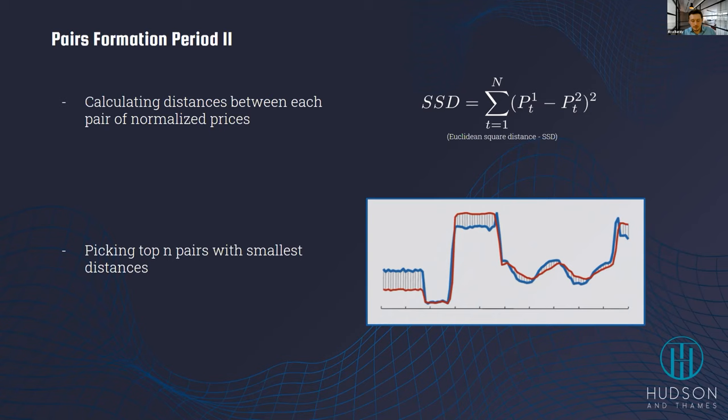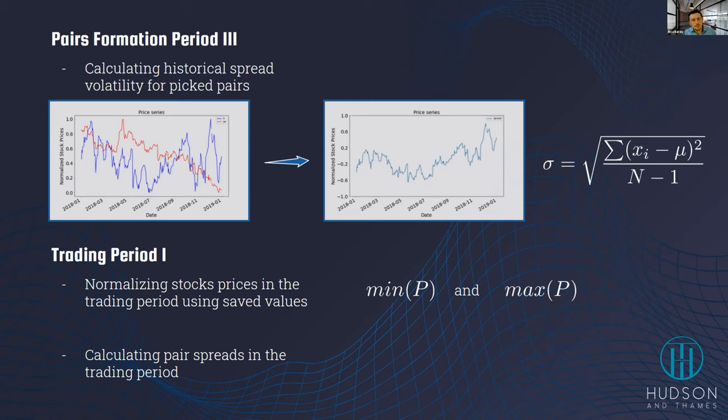The next step is calculating historical spread volatility. We calculate the spread — the difference between the two normalized price series — and then compute its standard deviation. This historical standard deviation will be used as a threshold to enter or exit trades during the trading period.